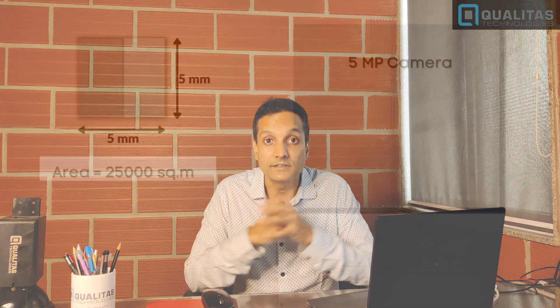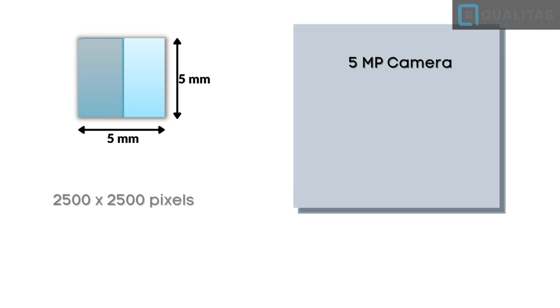But how does that translate into physical dimensions? It's simple math. You have a picture representing a physical area. For example, if you're imaging a small capsule or tablet — about five millimeters in length and width — that's 25 square millimeters of physical dimension being imaged across a five-megapixel camera, which translates to roughly 2,000 to 2,500 pixels in either dimension.